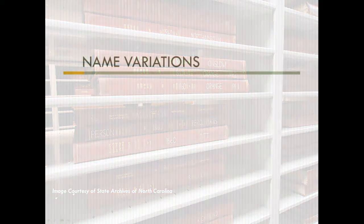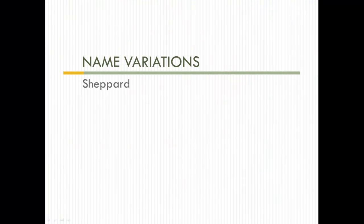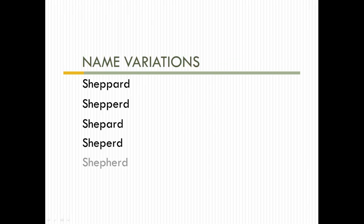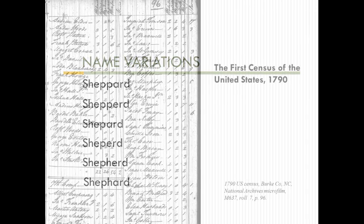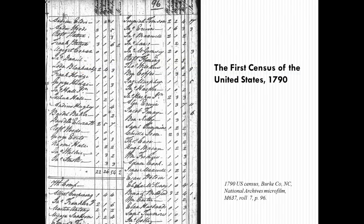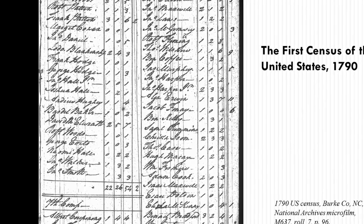Remember that the Census taker often wrote down the names as they sounded, which could be quite different from the spellings as you know them. Keep in mind also that the indexers of the Census, both print and online indexes, may misinterpret old handwriting. Therefore, you will want to search for a variety of spellings if you have difficulty locating an ancestor. Be sure also to look at the original Census image — don't rely on the indexer's transcription.